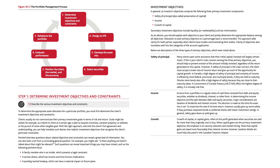To determine the appropriate asset allocation for a particular portfolio, you must first determine the client's investment objectives and constraints. Clients usually do not communicate their primary investment goals in terms of risk and return. Goals might be stated as a desire to retire at a certain age, a plan to acquire a business, vacation property, or sailboat, or the pursuit of some other tangible goal. With the right approach and the client's full agreement and understanding, you can help translate such desires into realistic investment objectives that recognize the client's particular constraints. Pointed interview questions about related objectives and constraints can reveal a great deal of information.